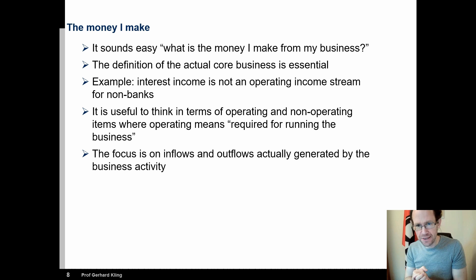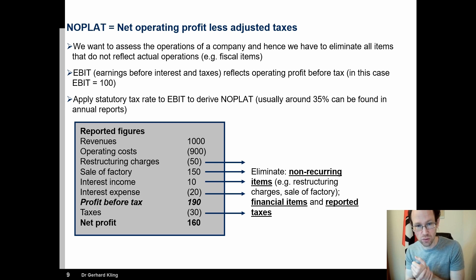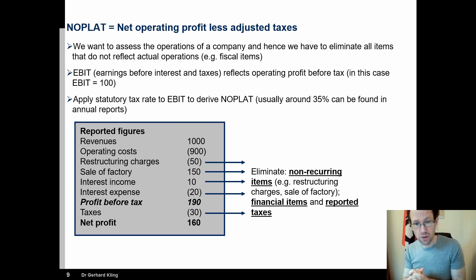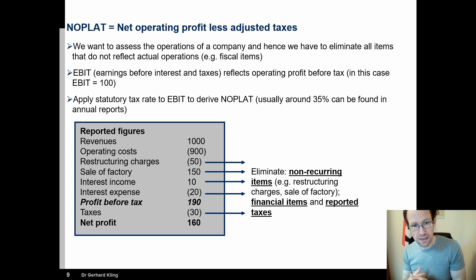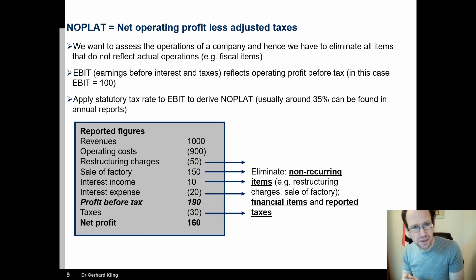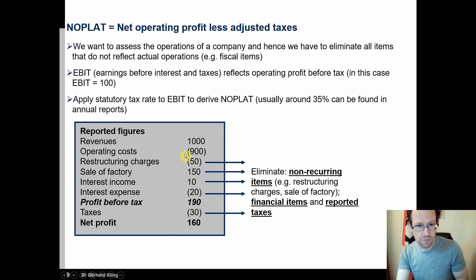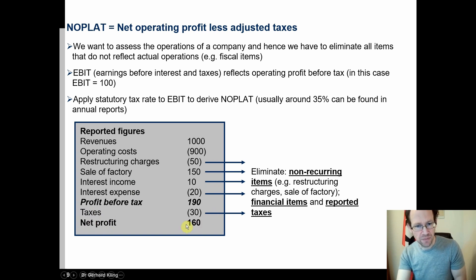It's very important to distinguish between operating and non-operating items. This is the main work we do when understanding value in companies — we go into the income statement and see how much of it is operating and what is non-operating. Here is an example; we will go through many examples in this course and they get more complex. In our reported figures we have revenues at 1,000, operating costs at 900, restructuring charges, a sale of a factory, interest income and interest expense, reported taxes, and a net profit of 160.